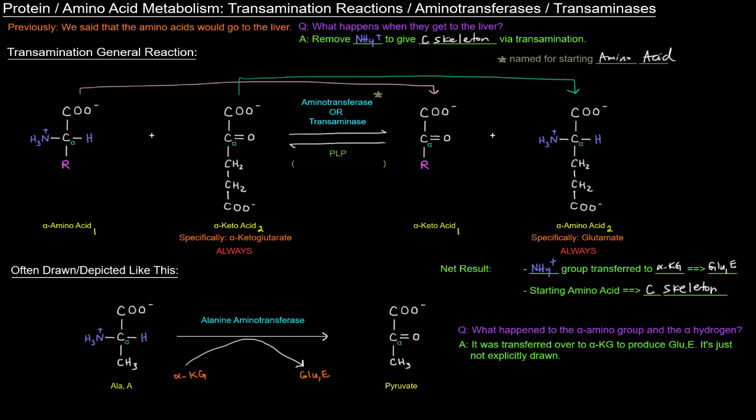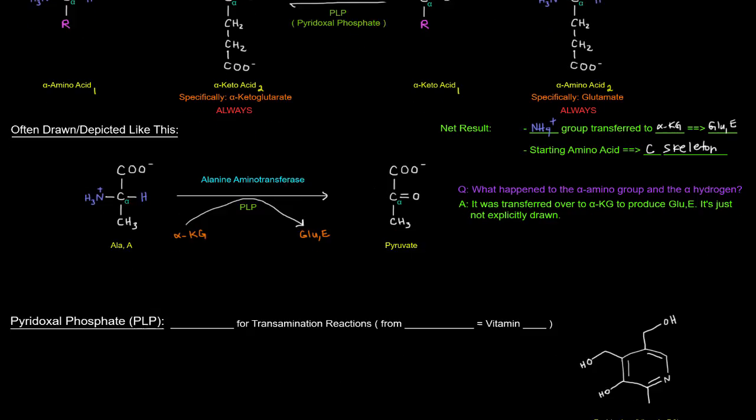Now this aminotransferase or transamination reaction requires a cofactor that's often abbreviated as PLP. That PLP is short for pyridoxal phosphate. And I didn't show it here, but it's right there. So pyridoxal phosphate is a cofactor that is important for transamination reactions. In fact, let's talk a little bit more about it.